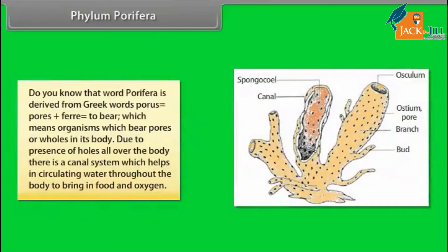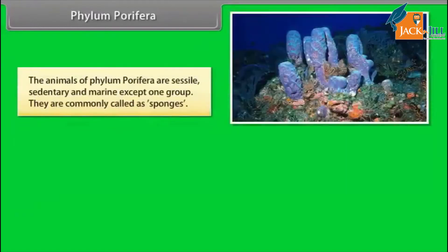Phylum Porifera. The word porifera is derived from Greek words porus, which means pores, plus ferre, to bear, which means organisms which bear pores or holes in its body. Due to the presence of holes all over the body, there is a canal system which helps in circulating water throughout the body to bring in food and oxygen. The animals of Phylum Porifera are sessile, sedentary, and marine, except one group. They are commonly called sponges.